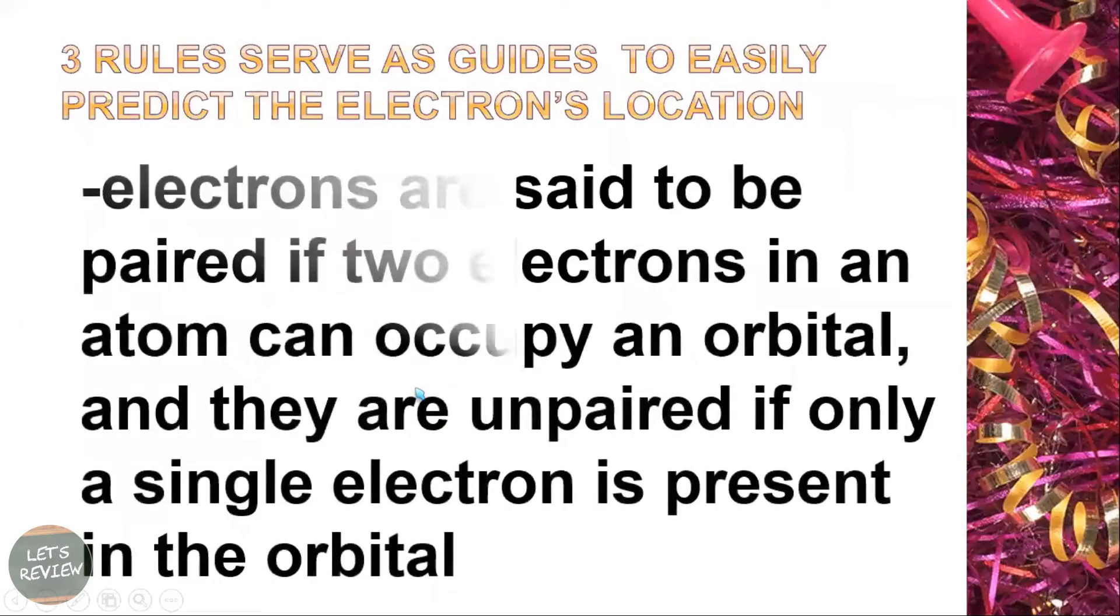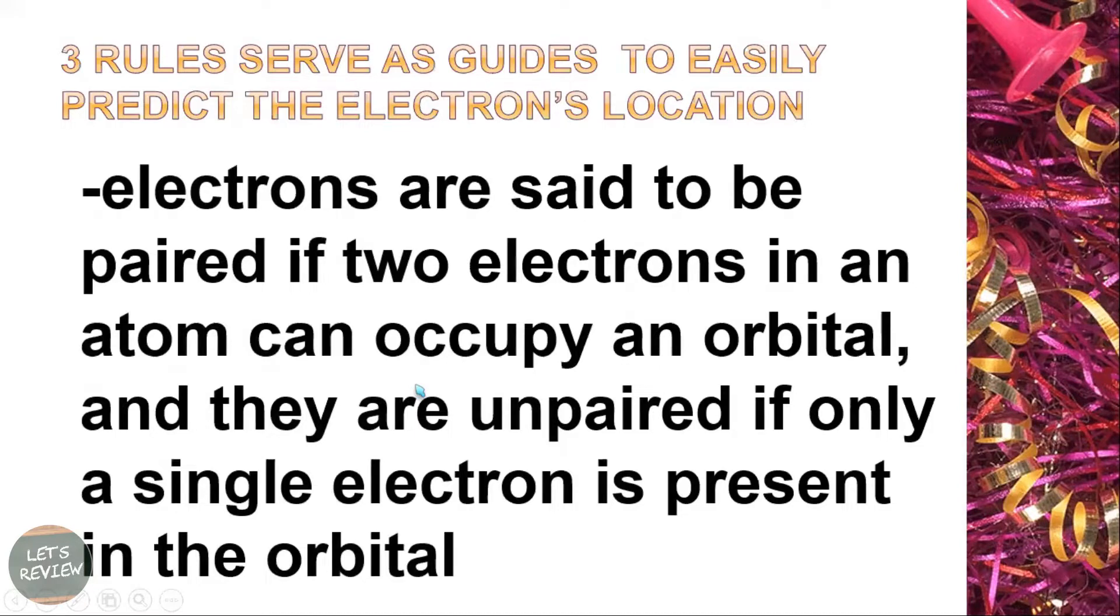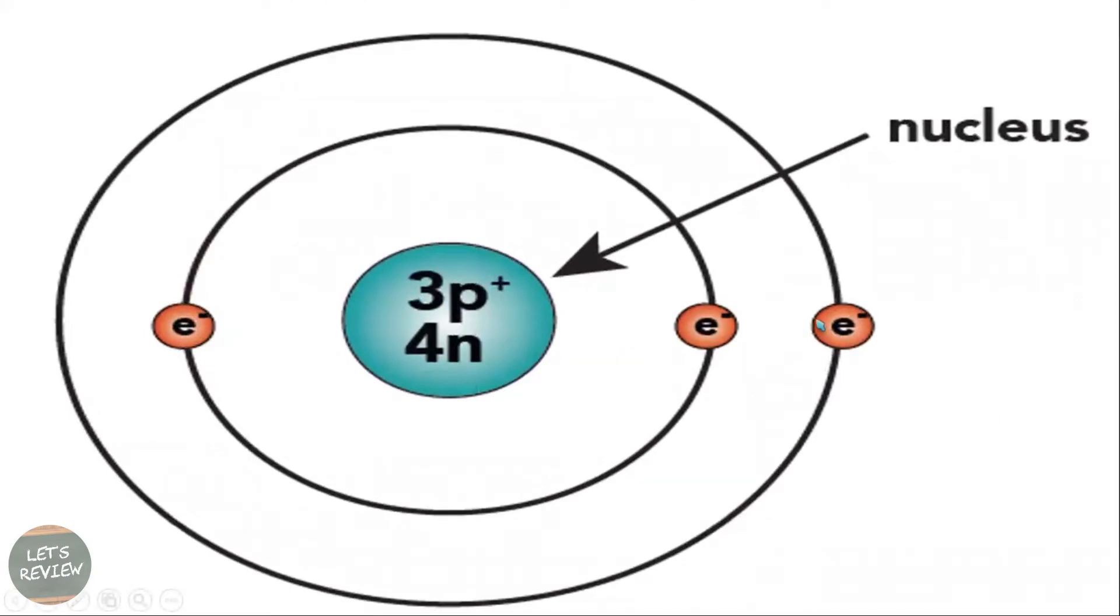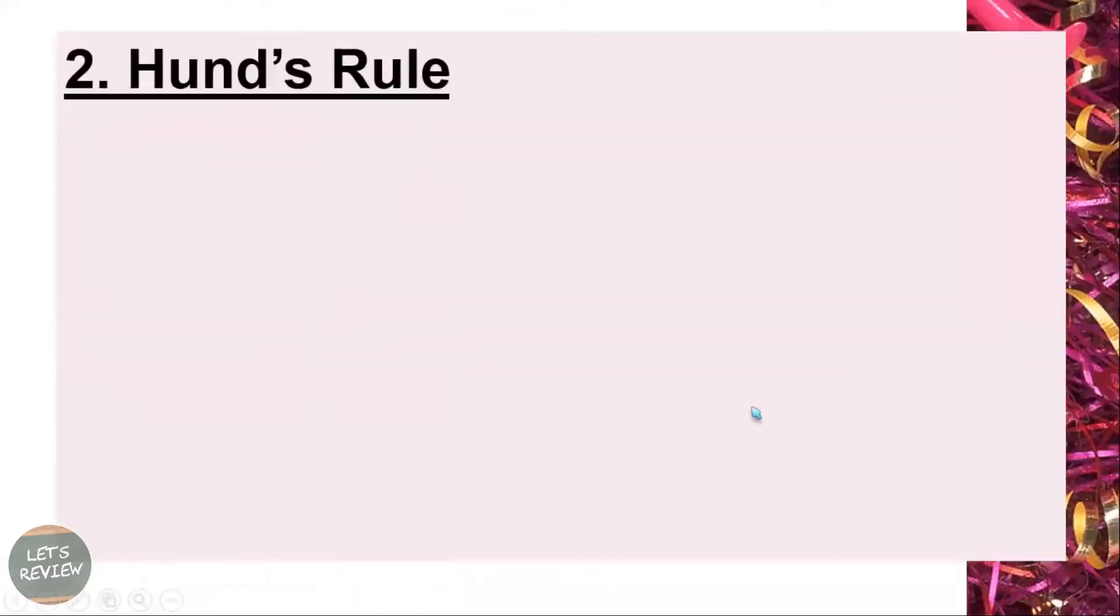Another thing about Pauli's exclusion is that electrons are said to be paired if two electrons in an atom can occupy an orbital, and they are unpaired if only a single electron is present in the orbital. Like in lithium, there's a single electron that doesn't have any partner. But in the first orbital, you will see that they are paired, and you also need to remember the Pauli exclusion, remember the maximum number per orbital.